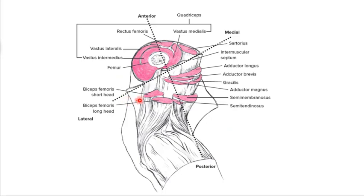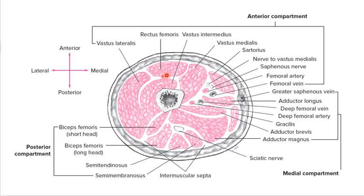When we look at the thigh, it's easier to divide it into four quadrants: anterior musculature on the front of the leg, posterior — your quad group versus your hamstrings — your lateral group, mostly your glute musculature like glute medius and glute minimus, and then your medial group like your adductors. A cross section shows your anterior compartment, medial compartment, and posterior compartment.